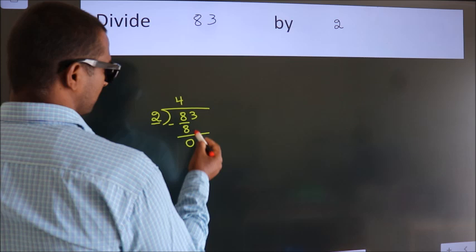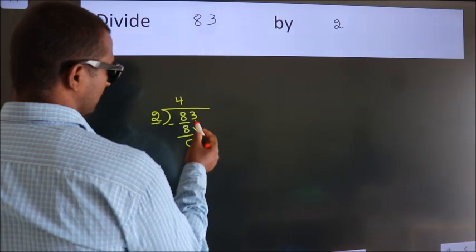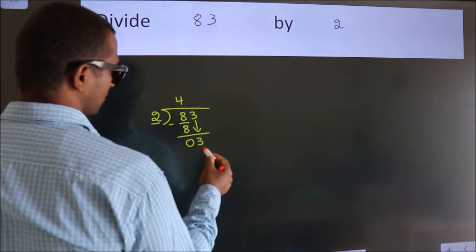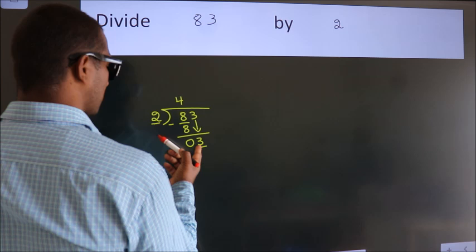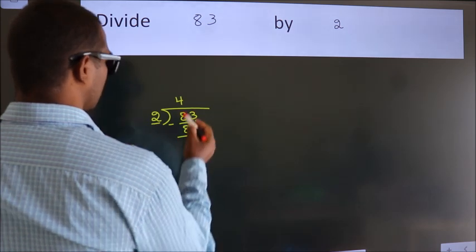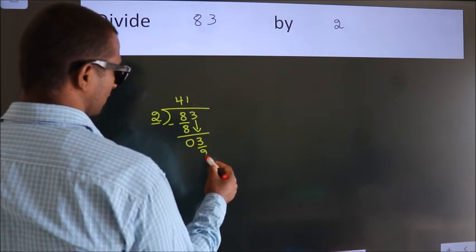After this, bring down the beside number. So, 3 down. A number close to 3 in 2 table is 2 ones 2.